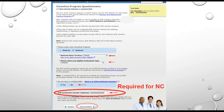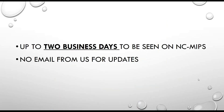Once you've entered all your information, click Save your changes and continue. The information you updated will be reflected in NC MIPS within two business days, but you won't receive an email from us if you've updated your information, so there's no need to wait on us if you need to attest or re-attest.